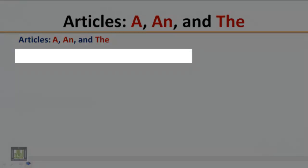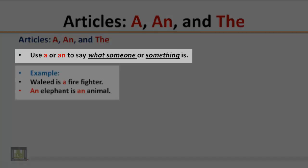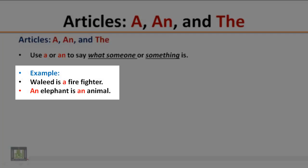Articles A, An, and The. Use A or An to say what someone or something is. For example: Waleed is a firefighter. An elephant is an animal.